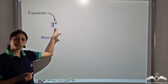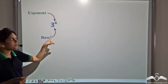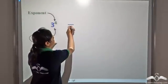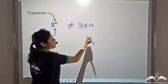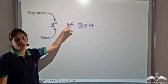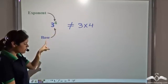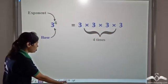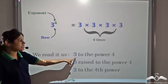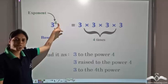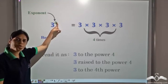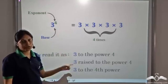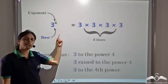So this is another exponential number. Three is the base here and four is the exponent. Remember that this is not three times four — this is three multiplied four times, that is three multiplied with itself four times. We read it as 3 to the power 4, or 3 raised to the power 4, or 3 to the fourth power. We can read it in any manner we want.